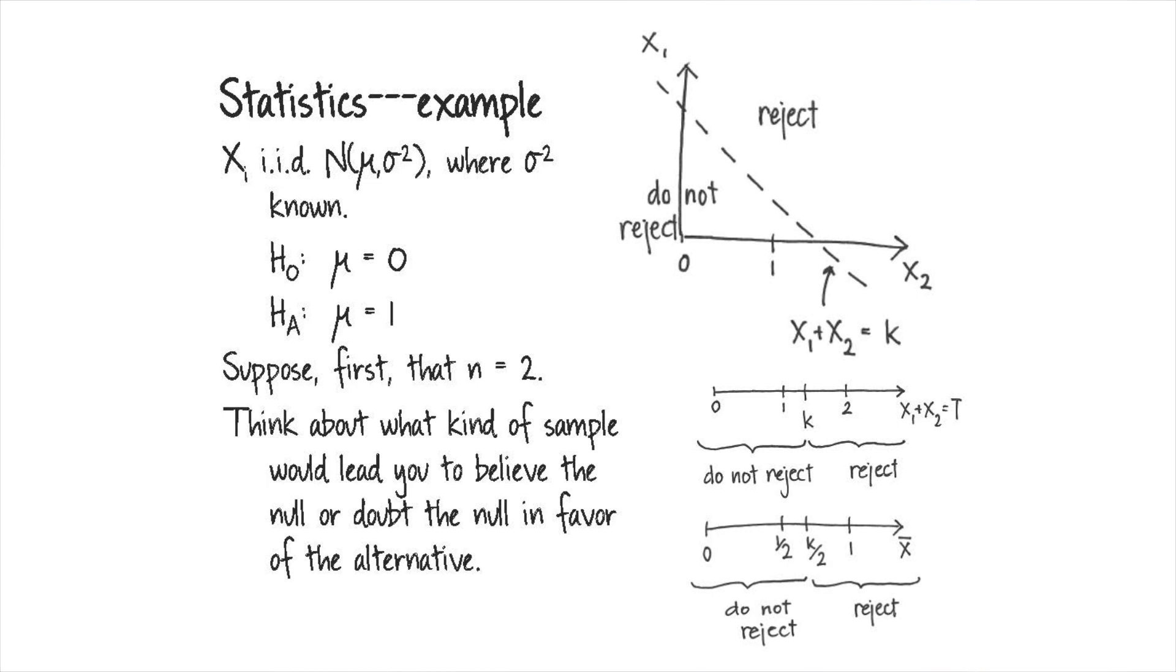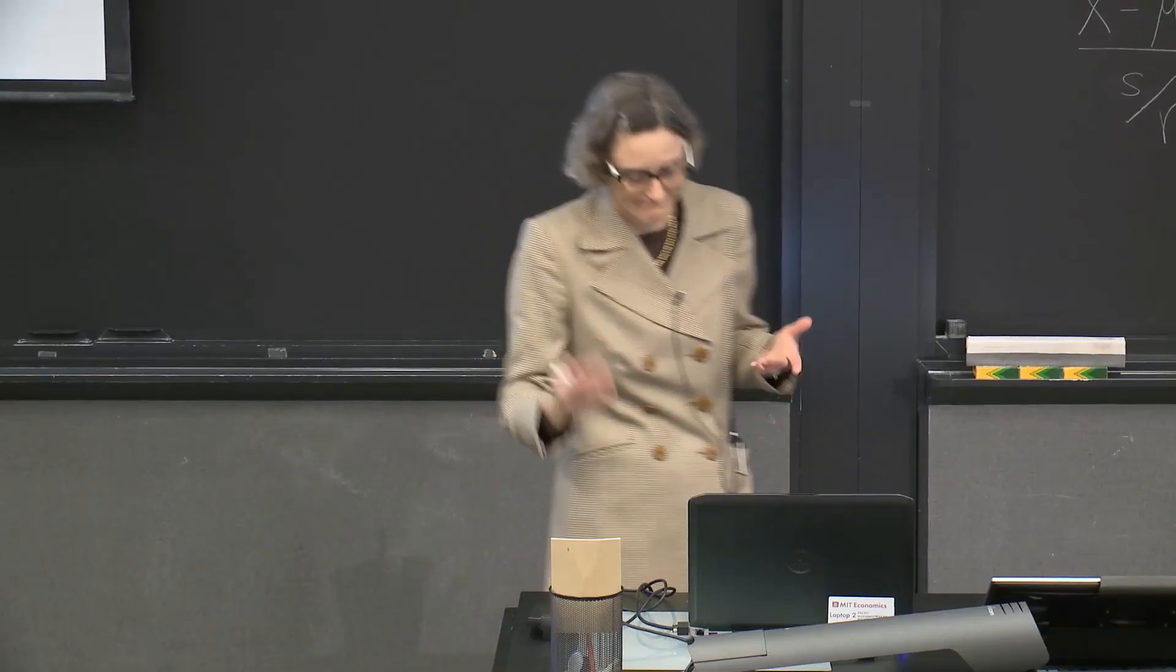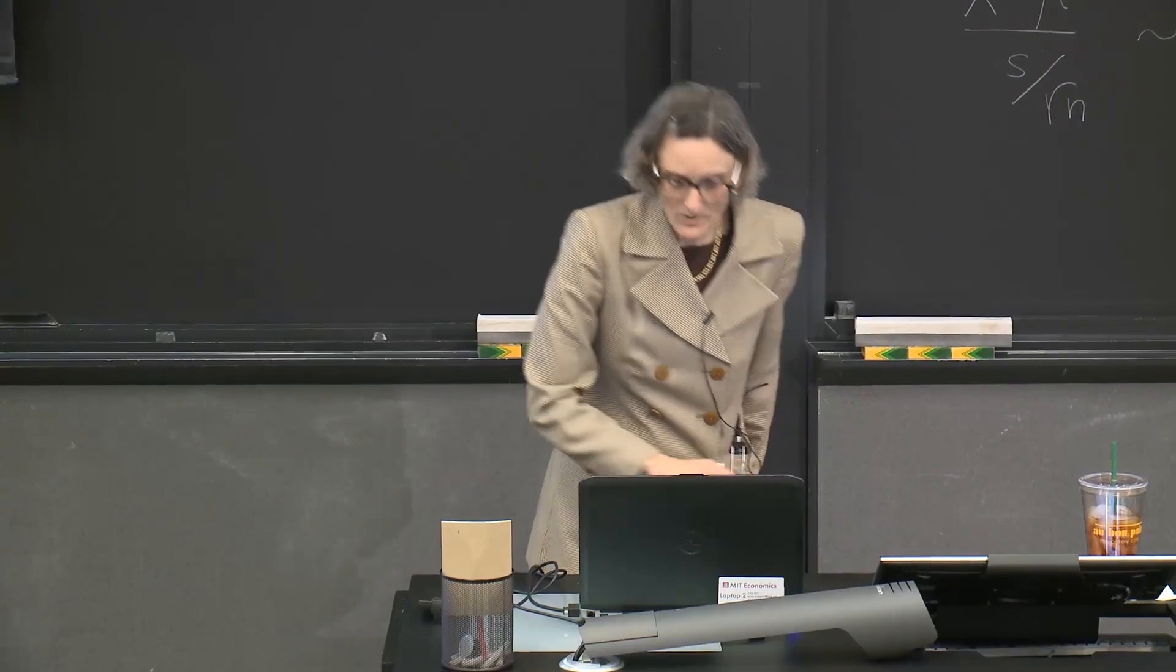So does everyone understand how these three ways of thinking about defining the critical region for a hypothesis test are equivalent, and they're going to result in identical procedures? And does this make sense? We get large values of our sample, we want to reject the null. Small values, we want to accept the null.